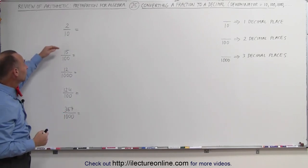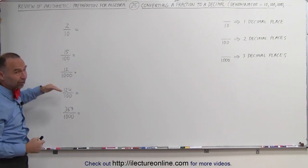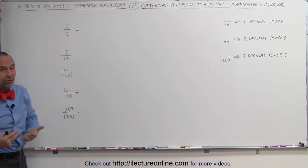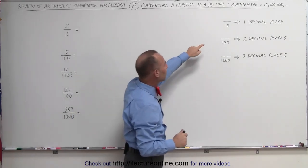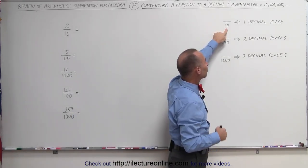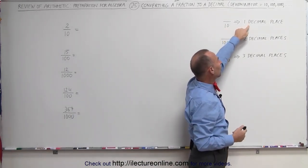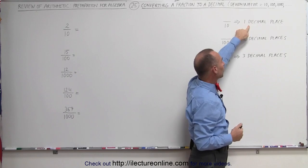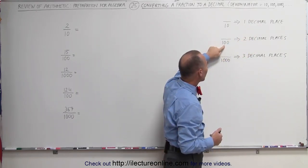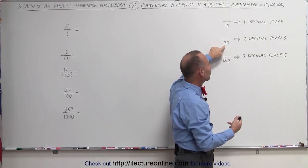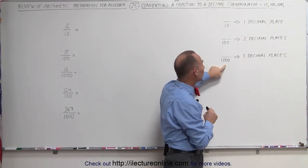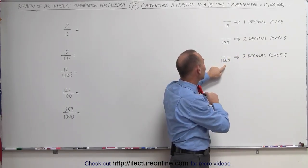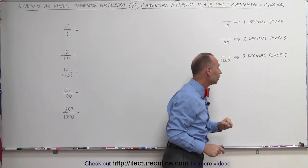The easy cases are where the denominator is 10, 100, 1000, 10,000, and so forth. When the denominator is 10, we need to turn that into a number with just one decimal place. If the denominator is 100, we need two decimal places, and when the denominator is 1000, we need three decimal places.